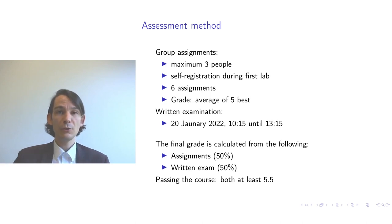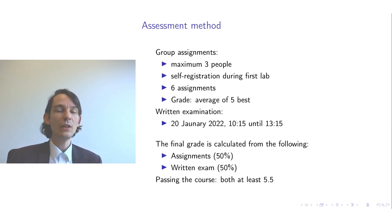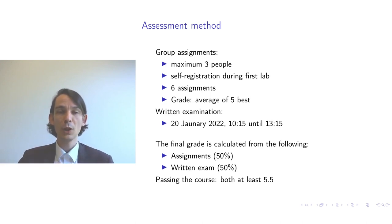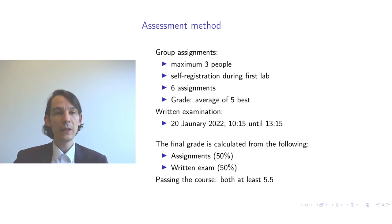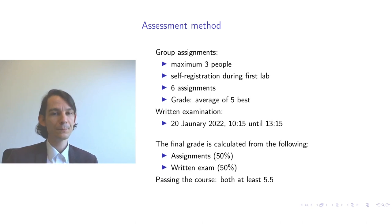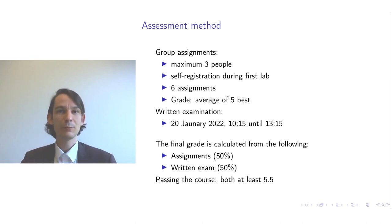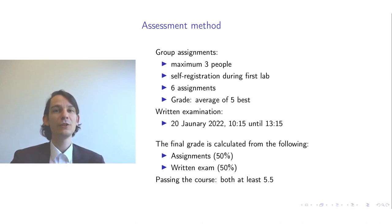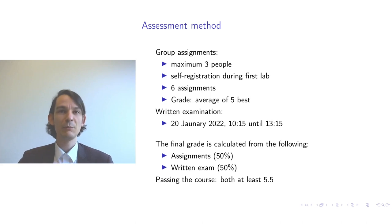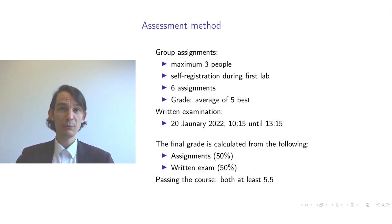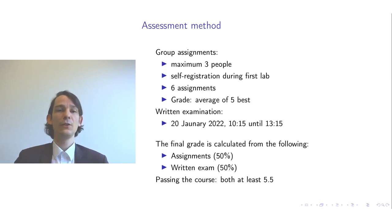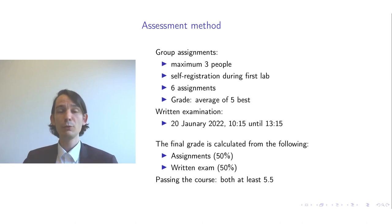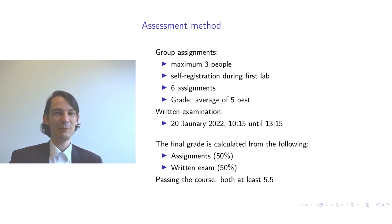For the assessment of this course there are two parts. Part one is the group assignments. We make groups of a maximum of three people. During the first practical class you can register your group, and this can be done via Brightspace. There are six assignments in total and the grade will be the average of the five best assignments.